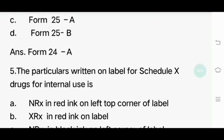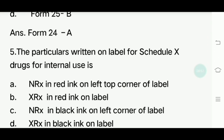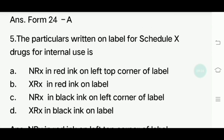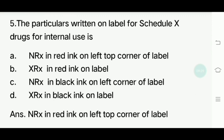Fifth question: The particulars written on label of Scheduled X drugs for internal use. What appears on the label? Options given: NRX in red ink on left top corner of label. The answer is NRX in red ink on left top corner of label.